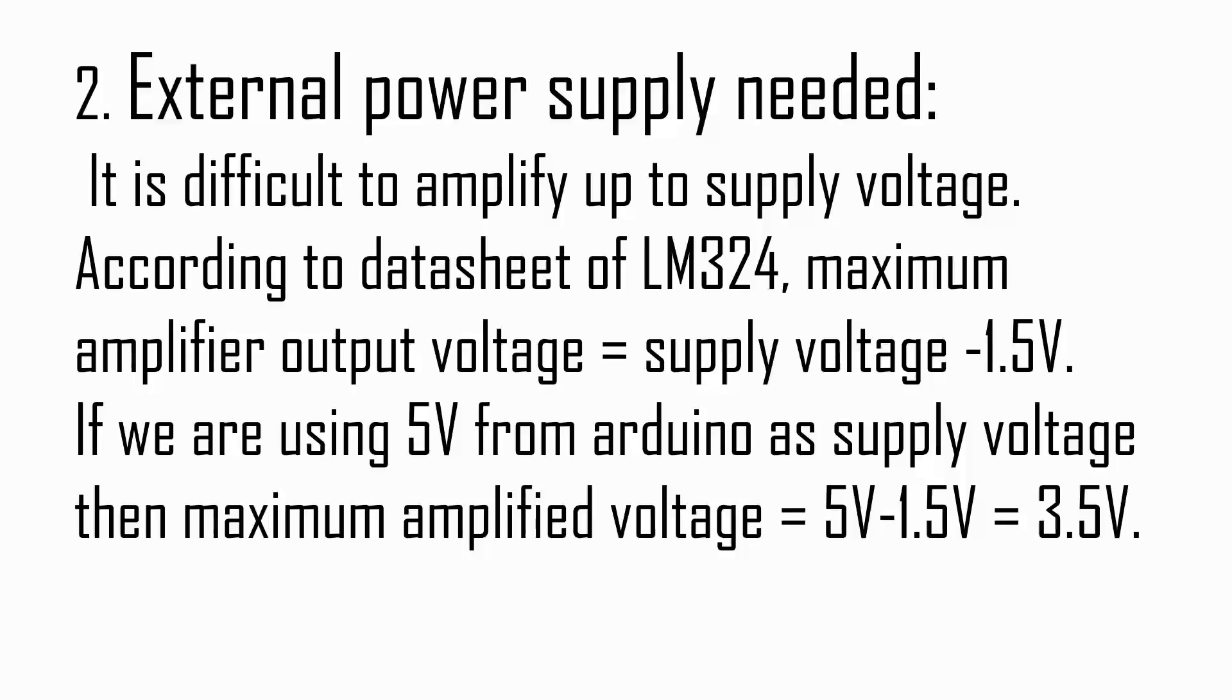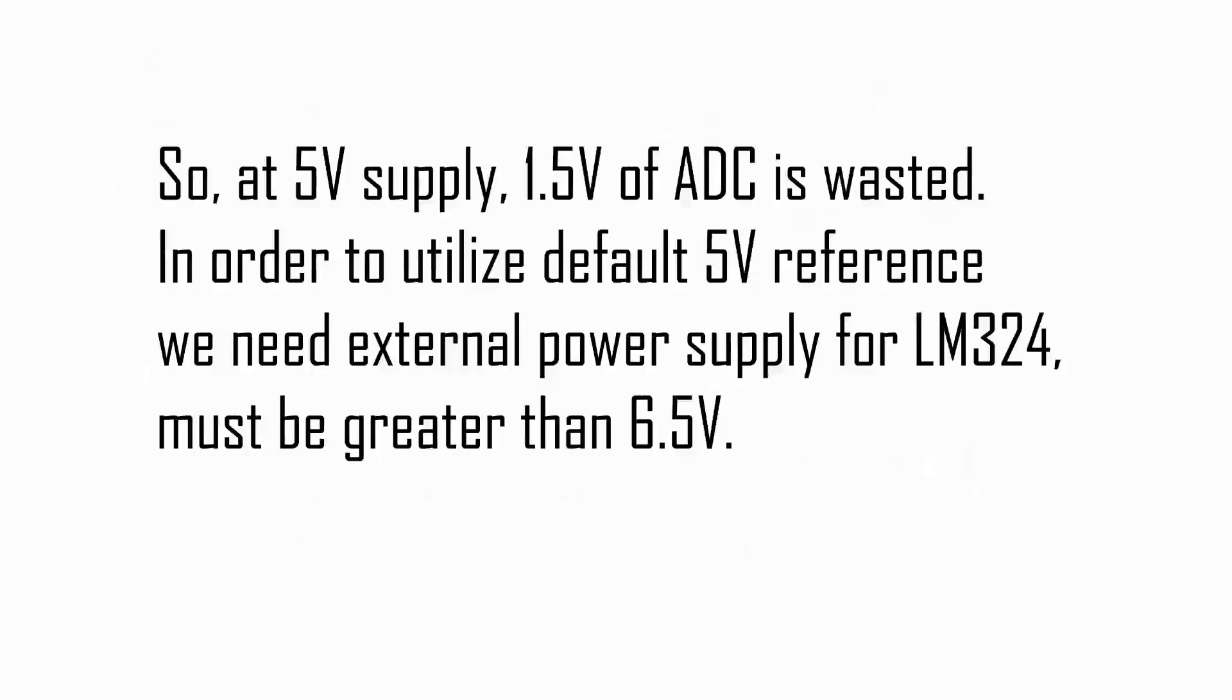Two, external power supply needed. It is difficult to amplify up to supply voltage. According to the datasheet of LM324, maximum amplifier output voltage equals supply voltage minus 1.5V. If we are using 5V from Arduino as supply voltage for operational amplifier, the maximum amplifier output will not exceed 5V minus 1.5V, that is 3.5V. So at 5 volt supply, 1.5 volt of ADC is wasted. In order to utilize default 5 volt reference, we need external power supply for LM324 and must be greater than 6.5 volt.